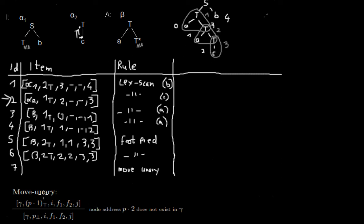The move unary rule says we have a tree. In this case it's alpha 2. We are in the first daughter node of another node. In this case it's the first daughter node of the root node in the top position, where we have any foot node and any span length of the item. And the side condition is that the node address p2 doesn't exist. That just means that this node doesn't have a sibling.